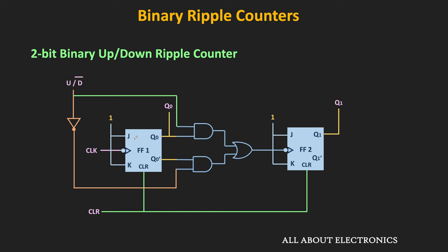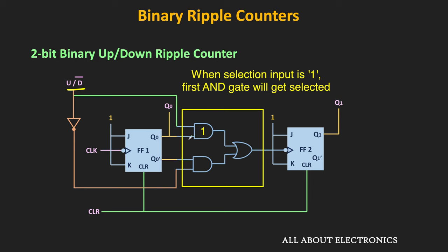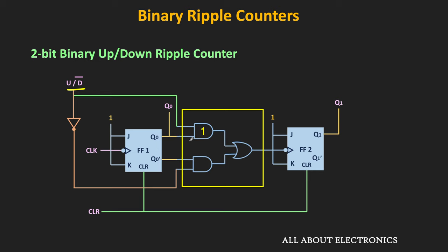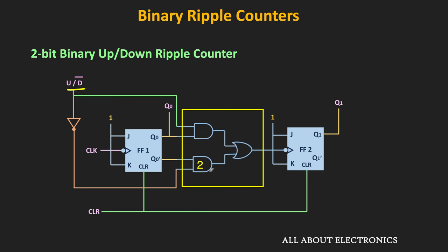This is the circuit of the 2-bit up/down counter, where the block between the two flip-flops represents the 2-to-1 multiplexer. The selection input determines whether Q0 or Q0-bar connects to the clock input of the next flip-flop. When the selection input is 1, Q0 connects to the clock input and the counter works as an up counter. When the selection input is 0, Q0-bar is applied to the clock input and the counter works as a down counter.